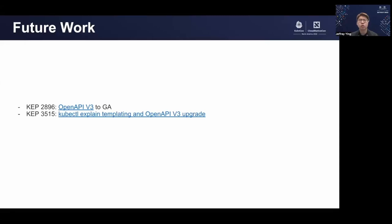As for future work, OpenAPI v3 is currently in beta and will look to move to GA very soon. Clients of OpenAPI v2 will also be slowly migrated to using OpenAPI v3, starting with kubectl explain. This upgrade also provides additional functionality with templating, including outputting markdown, HTML, or even custom templates. Thanks.